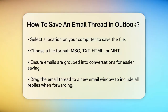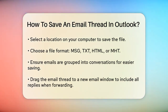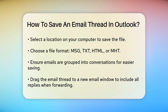Outlook allows you to save emails in formats like MSG, TXT, HTML, or MHT. For saving an entire thread, you might need to ensure that the thread is grouped together. If your emails are set to Group into Conversations, you can see all the replies in one thread.